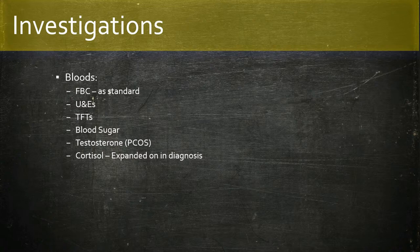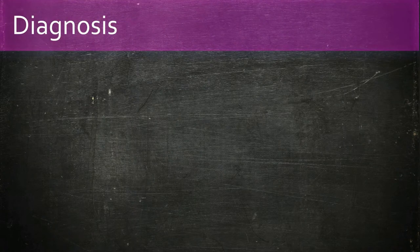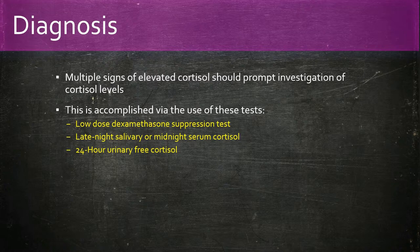Investigations include blood tests: full blood count, urea and electrolytes, thyroid function tests, blood sugar, testosterone for PCOS, and cortisol. We can test for cortisol in three different ways: the low-dose dexamethasone suppression test, late-night salivary or midnight serum cortisol, and 24-hour urinary free cortisol. We need at least two of these tests to be abnormal to establish a diagnosis of Cushing's syndrome.